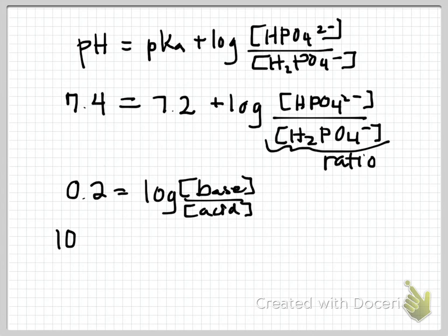So you get 0.2 equals the log of base over acid. And we'll take 10 to the both sides of that to get the base to acid ratio, which gives me 1.58. That makes sense because our pH target is more basic than our pKa, so I would expect that I need more of my base in my mixture relative to my acid.